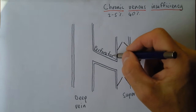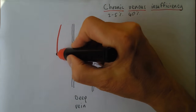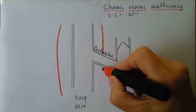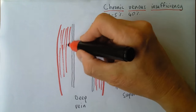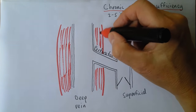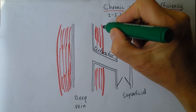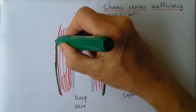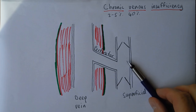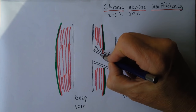The perforator veins are so called because they perforate the muscle fascia. The deep veins are inside the muscles — in the calf muscle for example — and the perforator veins perforate the tough fibrous muscle fascia over the top of the muscle. Sometimes these veins are called communicator veins because they communicate between the superficial and the deep systems; some people call them anastomotic veins because they form an anastomosis. They also contain valves directing flow appropriately.